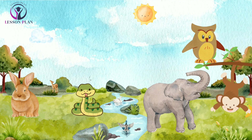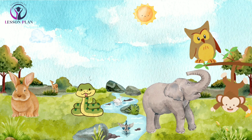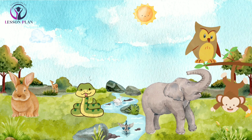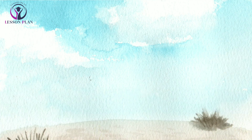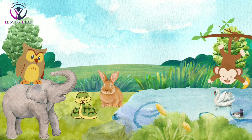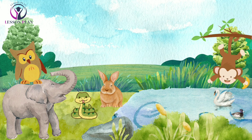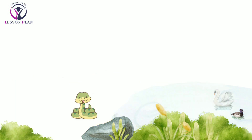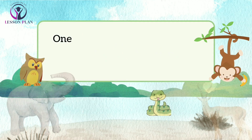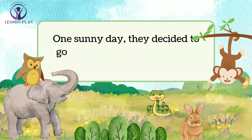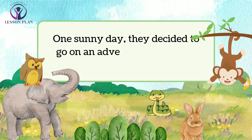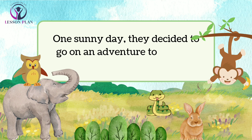In a land far, far away, there lived a group of friendly animals in the jungle. There was a playful monkey, a curious rabbit, a strong elephant, a sneaky snake, and a wise owl. They were all great friends and loved to play together in the lush green forest.